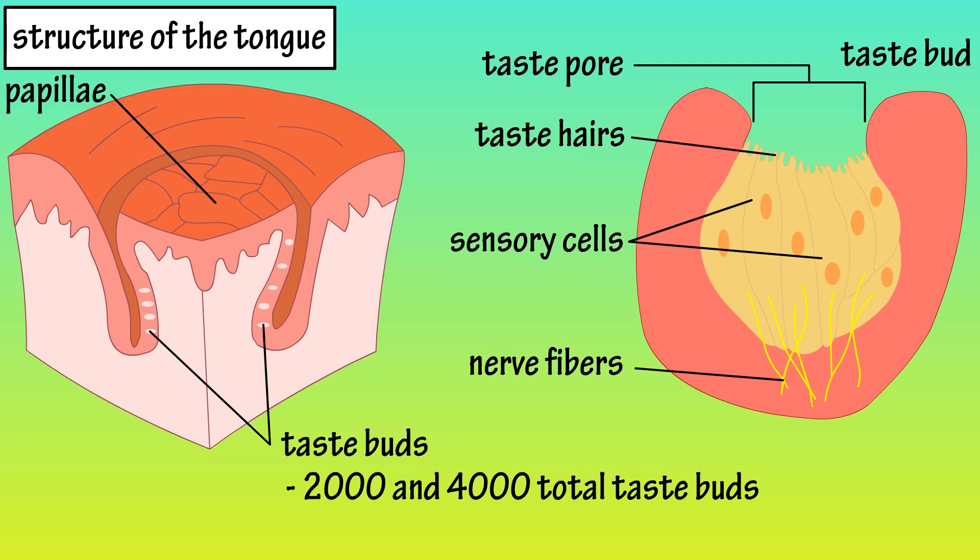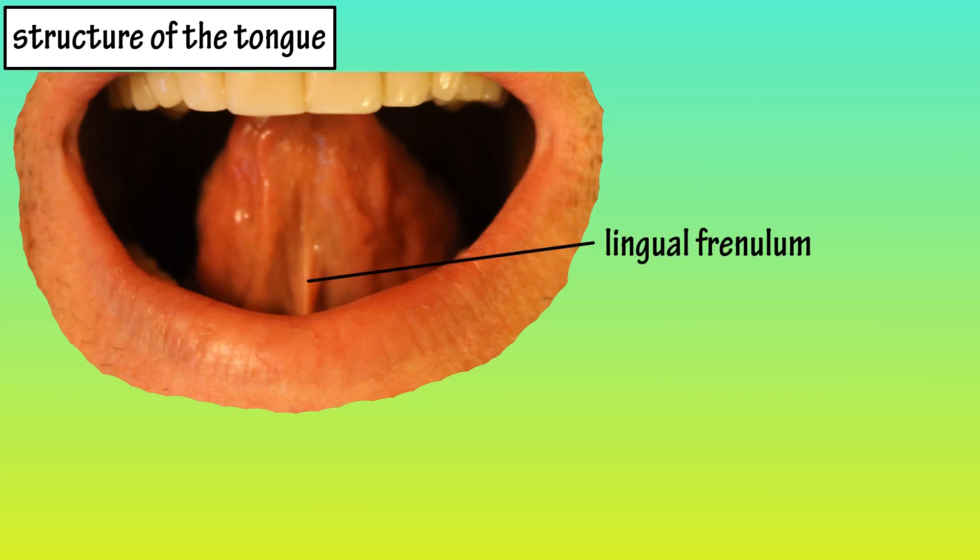On the bottom or under surface of the tongue is the lingual frenulum, which helps anchor the tongue to the floor of the mouth.